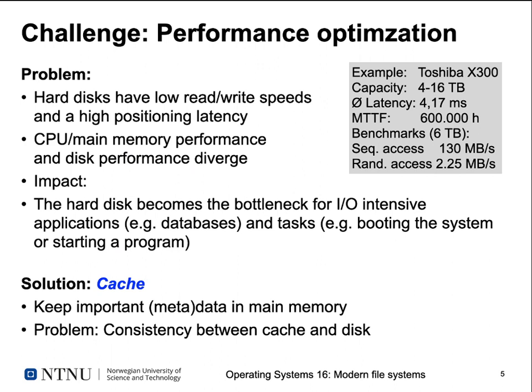In addition to reliability challenges we also have the challenge of getting good performance out of storage media. Looking at a Toshiba X300 disk drive — available in 4 to 16 terabyte capacities — it has an average latency of about 4 milliseconds, a mean time to failure of about 600,000 hours, and relatively slow access. The 6 TB drive achieves sequential access rates of about 130 MB/s, but with lots of random accesses requiring head movements the average throughput drops to just over 2 MB/s.